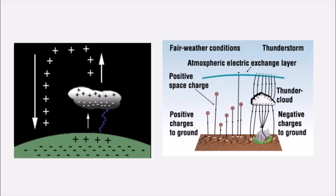Have you ever thought about what actually happens when there is lightning in the sky and when lightning strikes the earth? Let's understand what is lightning. In the clouds, air and clouds rub against each other in the sky, and two parts are formed. The upper part of the cloud becomes positively charged and the lower side becomes negatively charged. So on the top side there is positive charge and on the bottom side there is negative charge.